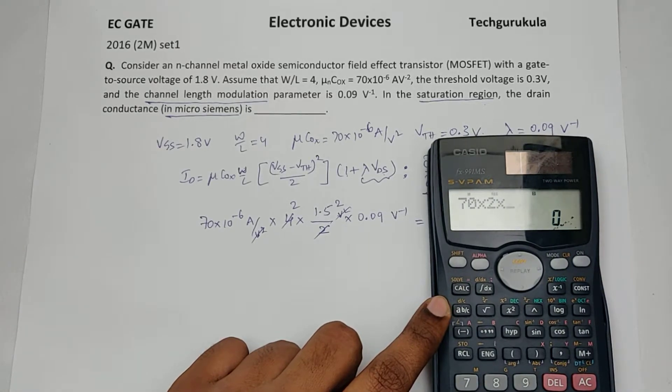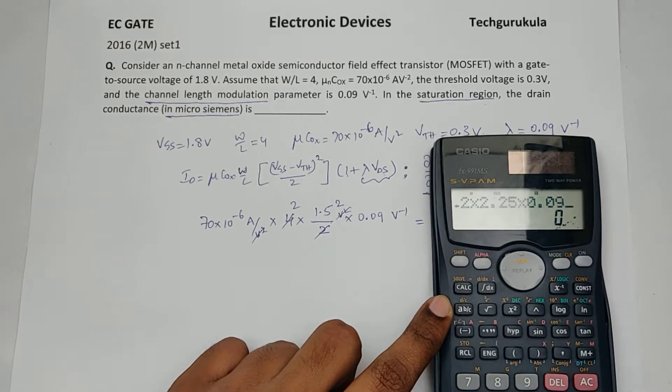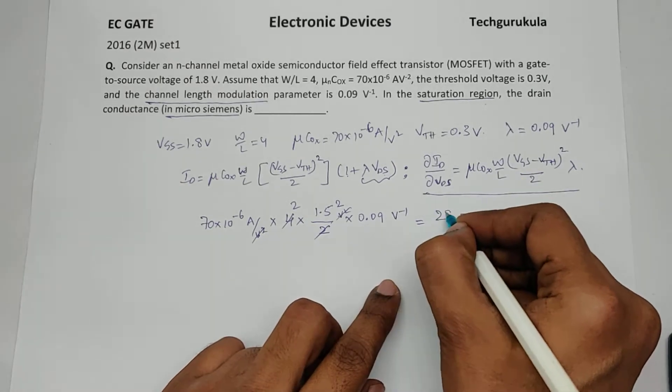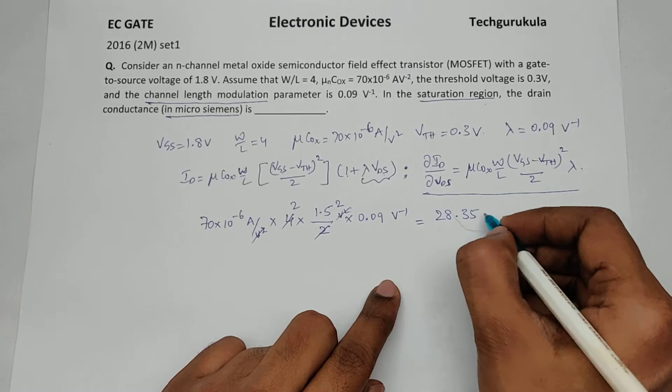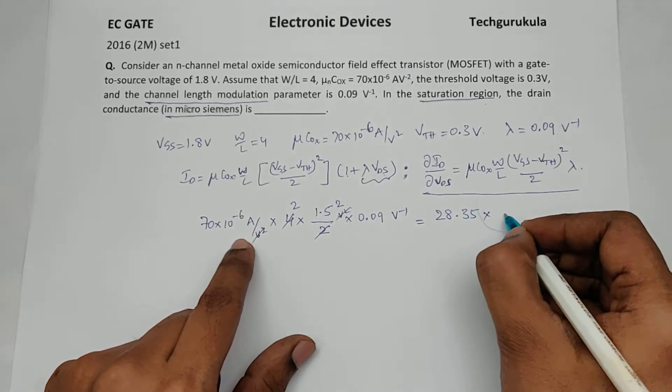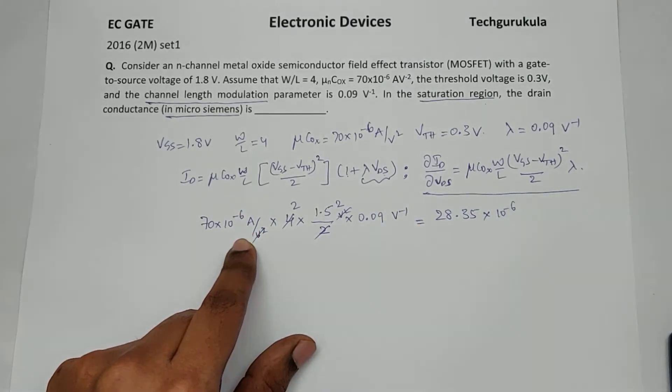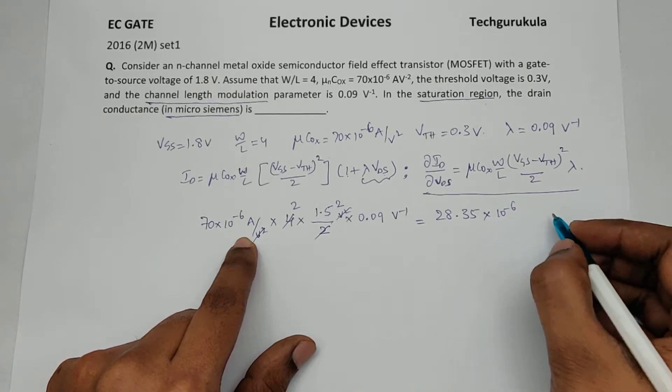This is 28.35, 28.35 times we have 10 power minus 6.